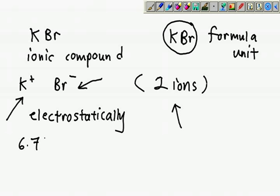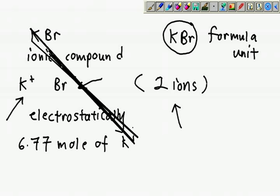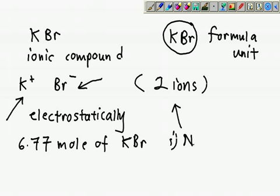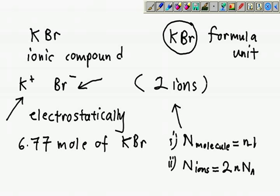Because of these 2 ions, what if they ask 6.77 mole of KBr? They will ask how many molecules? They will also ask how many ions. If they ask how many ions, you should put 2 times n times NA. Why? Because K+ is one ion, Br- is one ion. How many molecules is simply how many capsules, so you use the ordinary formula.